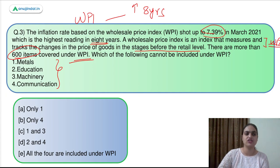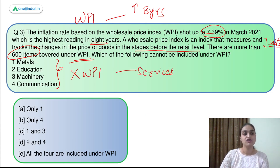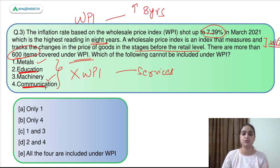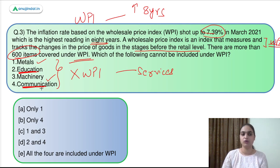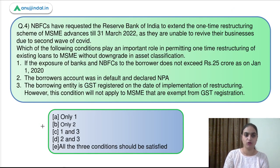Moving back to the question — it asks which of the following are not part of WPI. As mentioned, services will not be included under WPI. Metals are goods and machinery are goods, so they can be included. Education and communication are services. Transportation, education, communication, and medical care — all these can't be included under WPI. So the answer to this question should be option D, that is the second and fourth.